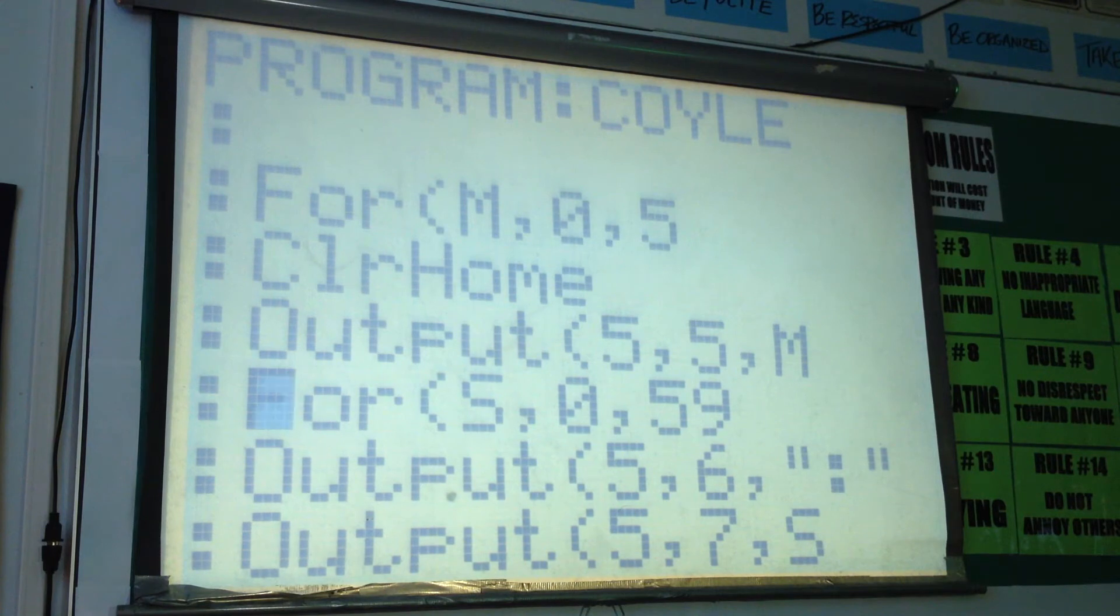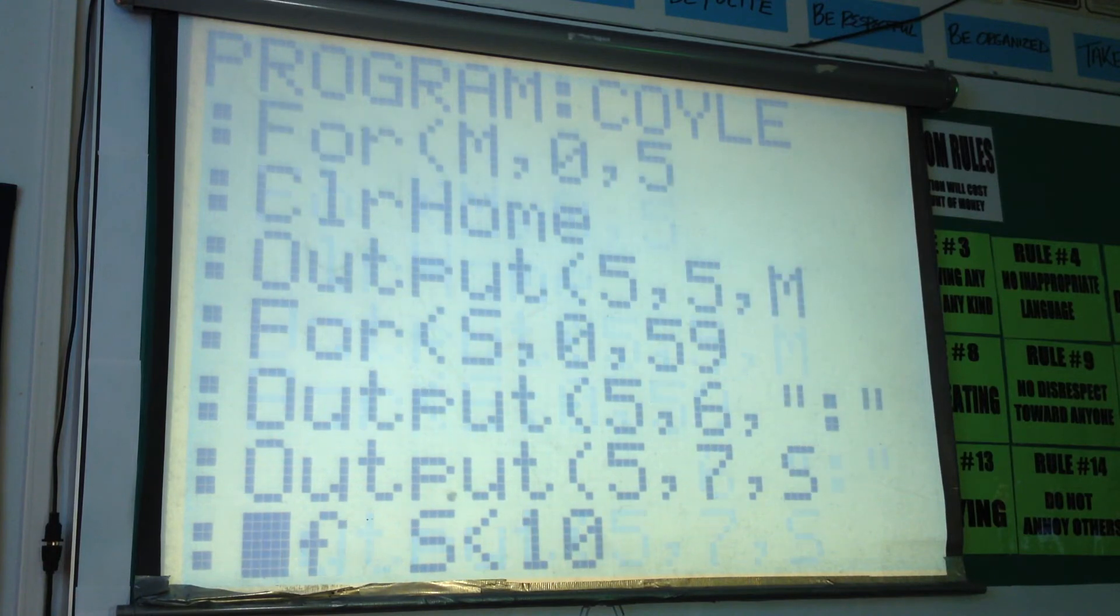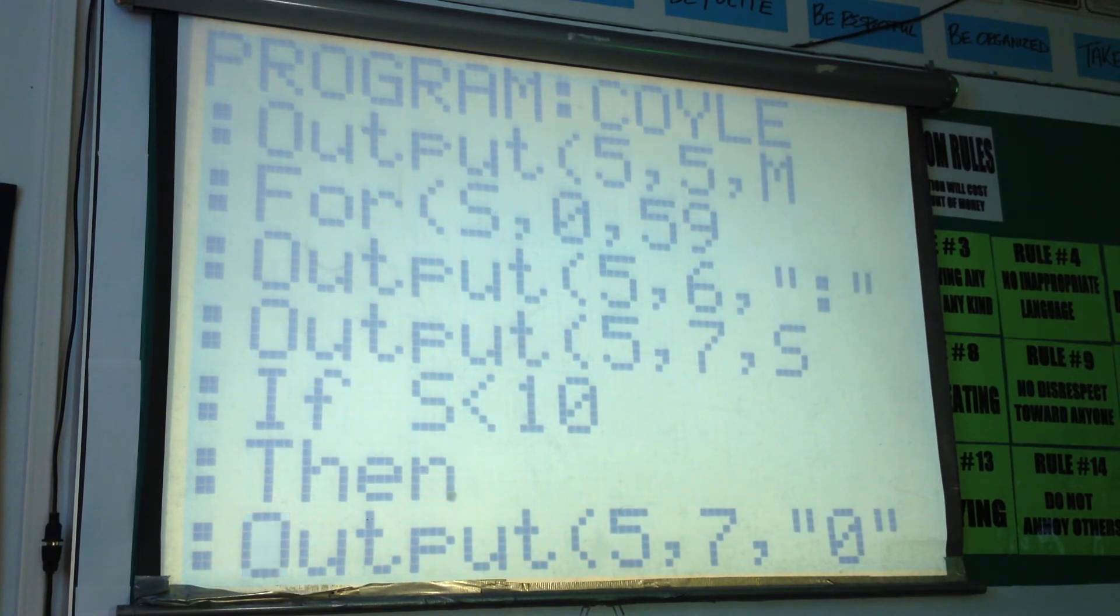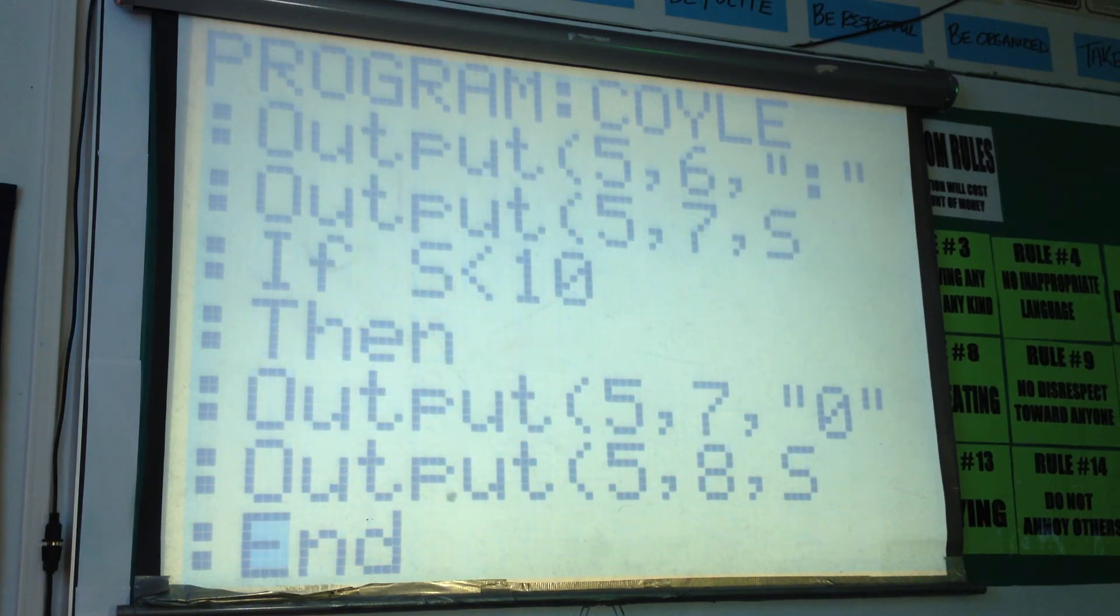Then start your second loop and print a colon at 56 and output the actual second at 57, unless S is less than 10, and if that's the case, then output 57M and then input 0 to hold a place in the tens spot of the second.